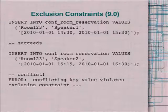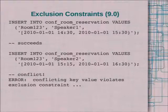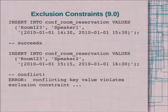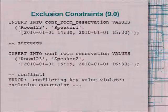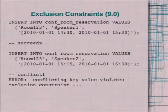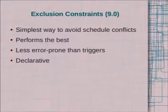Here's an example of the exclusion constraint in action. You have room one, two, three — the error message is pretty nice and tells you what actually conflicts with all that nice information so you can track down where the problem is. This is a straightforward example of double-booking a room for different speakers. If the speaker was the same it could fire either of the exclusion constraints because it would violate both. This is a simple way to avoid schedule conflicts.